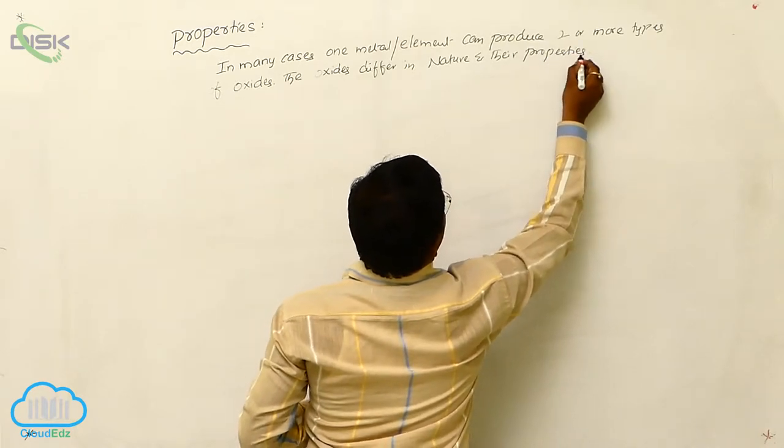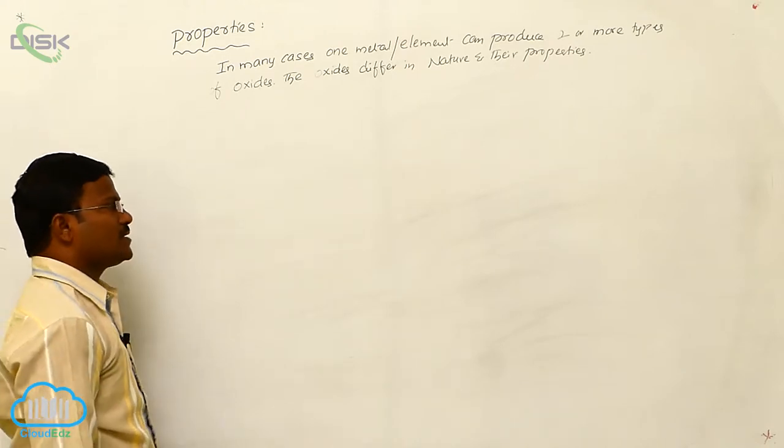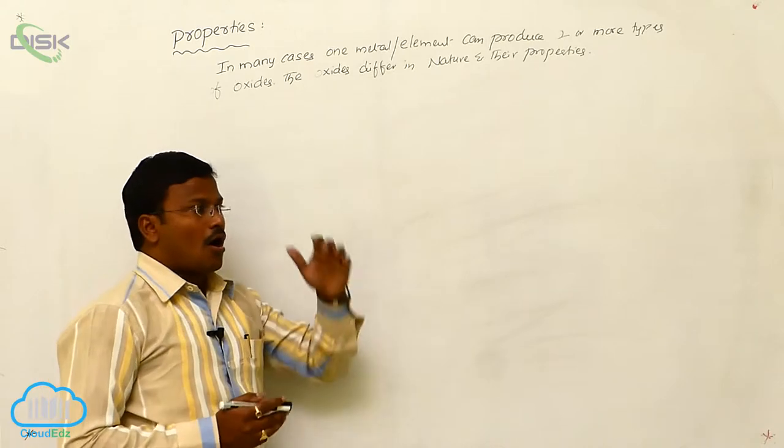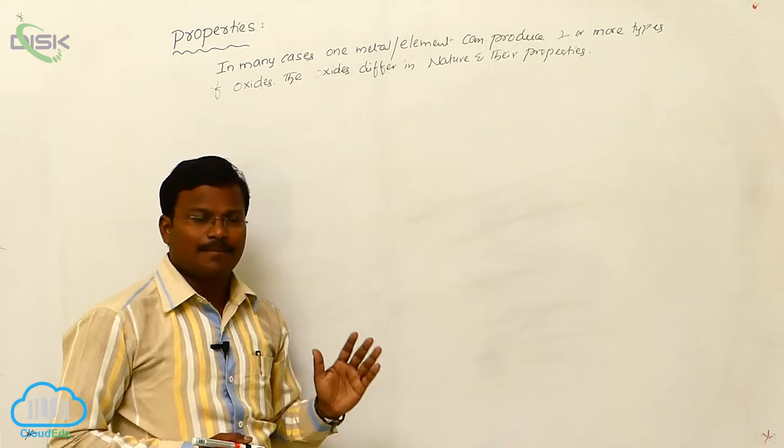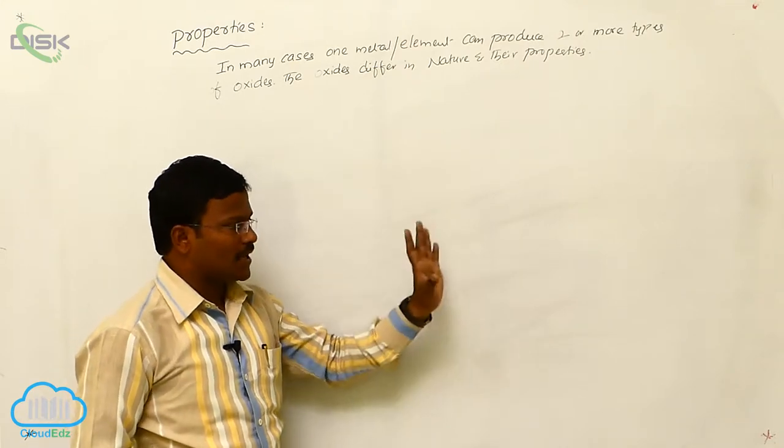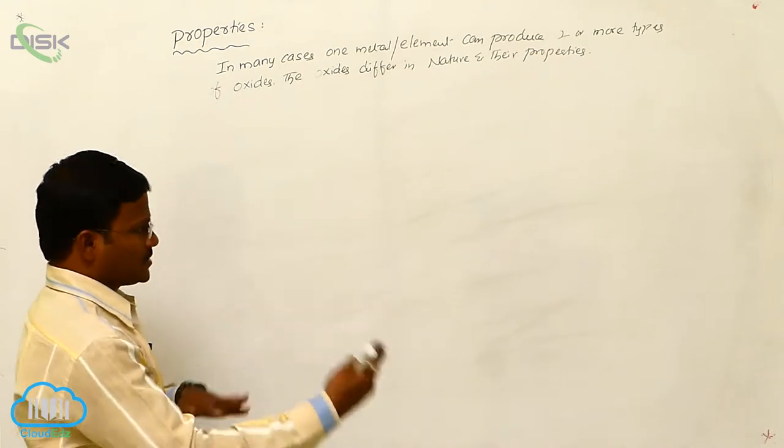So, this is about dioxygen. Once again, preparation, physical properties as well as chemical properties. The most important chemical properties: almost all metals except gold, platinum and all non-metals except inert gases, by reacting with oxygen, they produce different oxides.